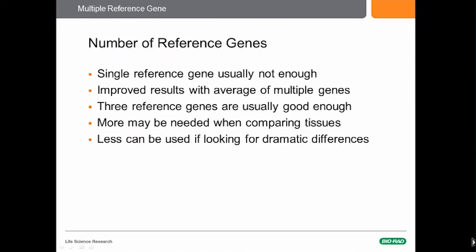How many reference genes should we use? Single reference genes frequently are not enough. By some estimates, about 25% of publications that rely on a single unverified reference gene are off by an average of threefold in expression, which can play havoc with your numbers. Typically we'll get much improved results with an average of multiple genes — three reference genes is frequently good enough. But when looking at different tissues, we may need more. In some cases, if we're looking for just a dramatic difference — something like 100 to 1,000-fold — you can use fewer, maybe only one.